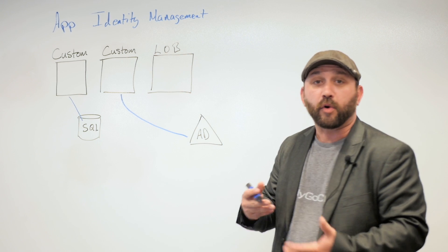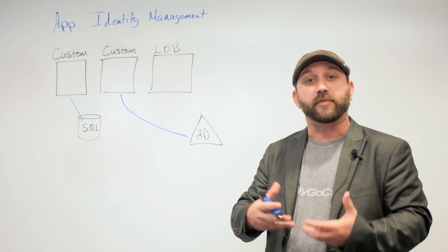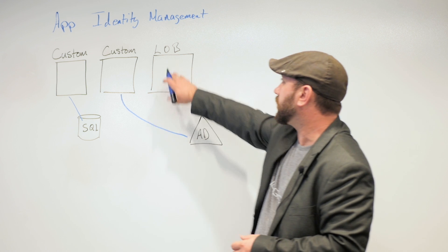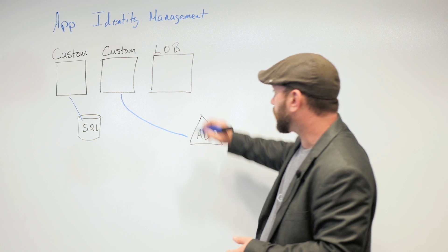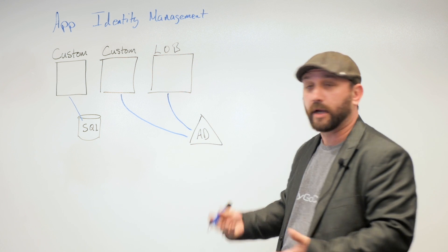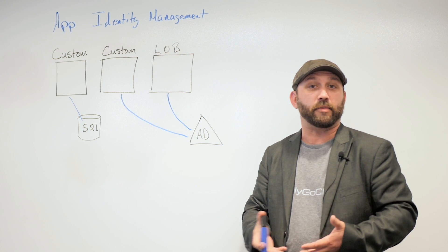And next to that, you probably have a number of line of business applications, various different commercial off-the-shelf apps. We'll refer to those as LOB apps. And these applications as well are using Kerberos through Active Directory. So this is a typical application scenario.